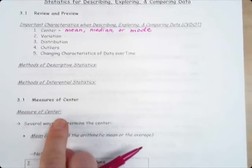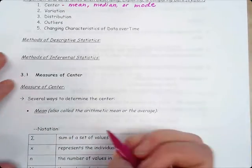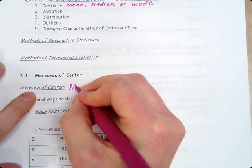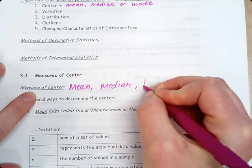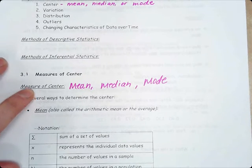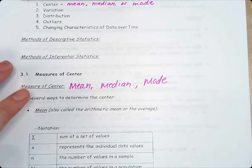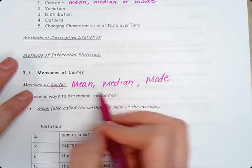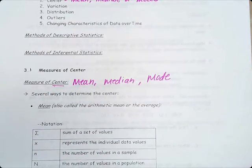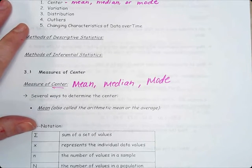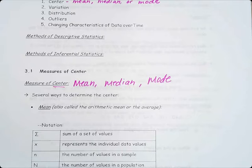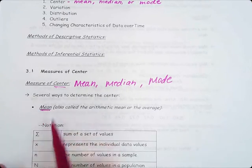Measures of center, again, is mean, median, and mode. Remember back in sixth grade, you learned mean, median, mode, and range. Well, for center, it's mean, median, mode. Range doesn't represent the center. It represents the spread or the distribution. Several ways to determine the center would be our mean. We are not going to use the word average. We are going to strictly use the word mean.